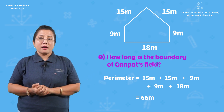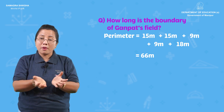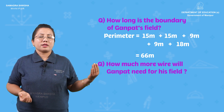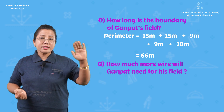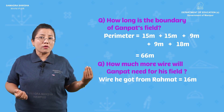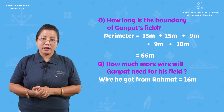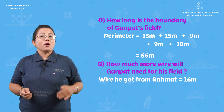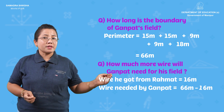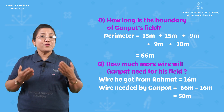Rami had 16 meters of fencing left over. Gunpat's boundary is 66 meters. So how much more fencing does Gunpat need compared to Rami's leftover? The calculation is 66 meters minus 16 meters, which equals 50 meters. So Gunpat needs 50 meters more.